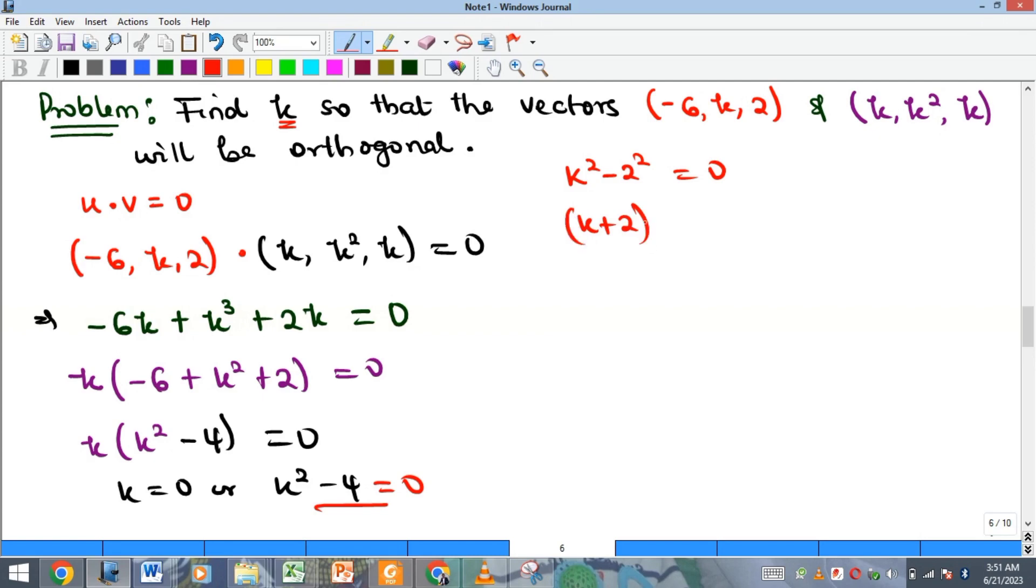If we apply difference of two squares, we'll have k plus 2 into the bracket of k minus 2 is equal to zero. That means k plus 2 is zero or k minus 2 is zero.